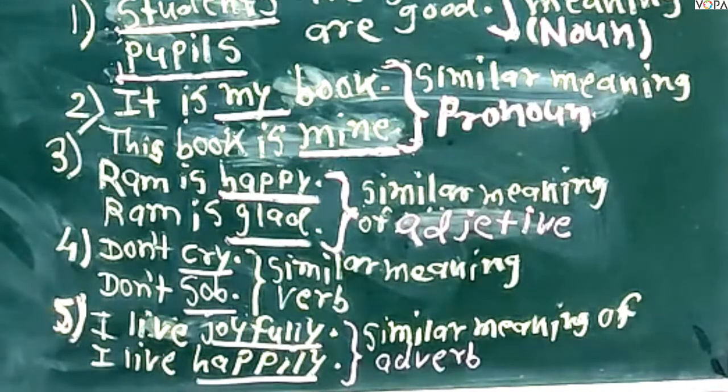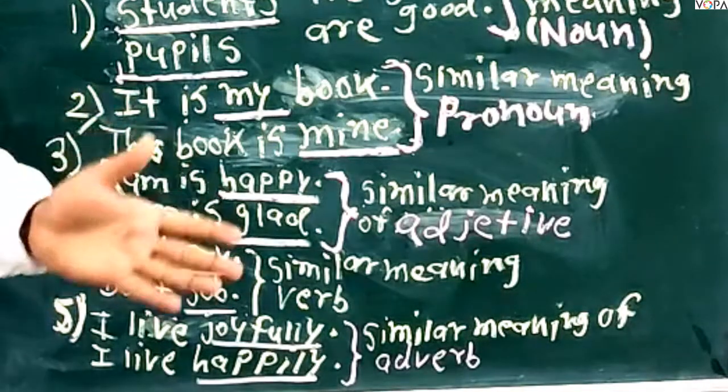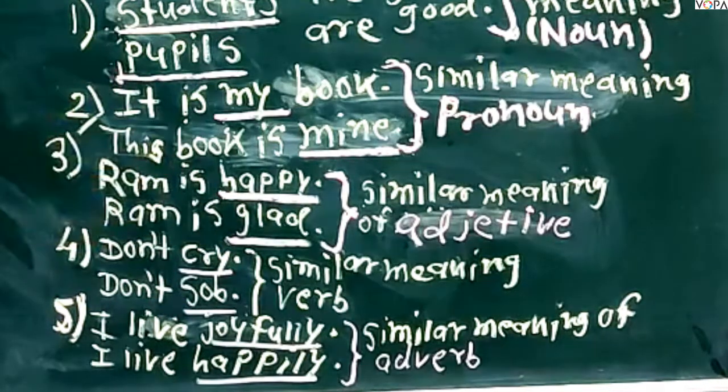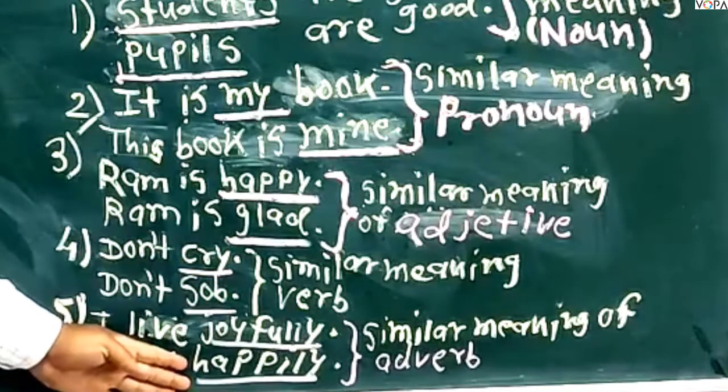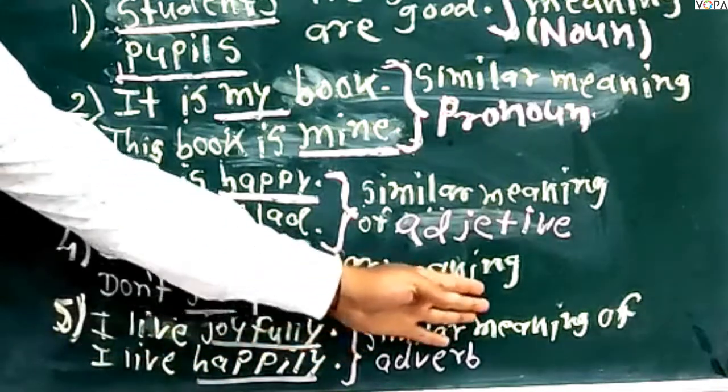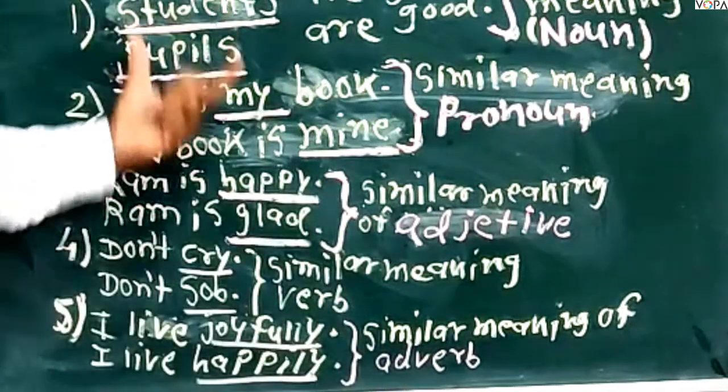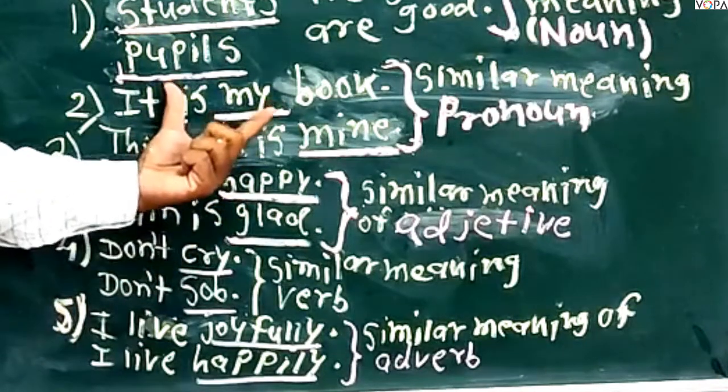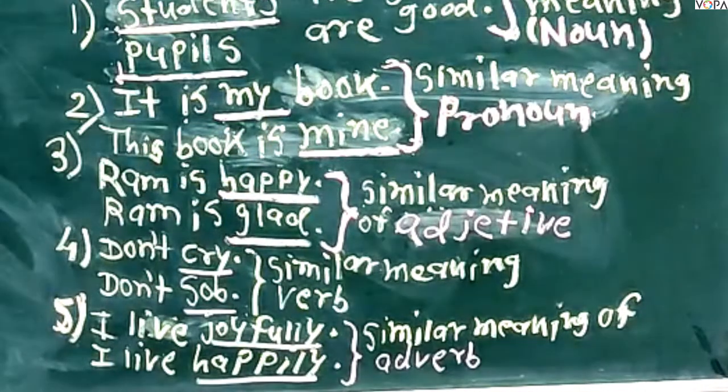Look at the last example. I live joyfully. I live happily. In this sentence, joyfully and happily both are similar meaning adverbs. So this is variety in similar meaning words. These are uses of similar meaning words.